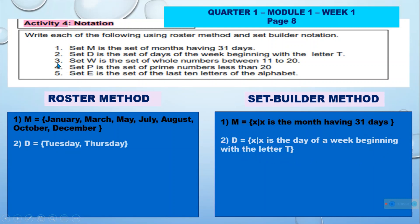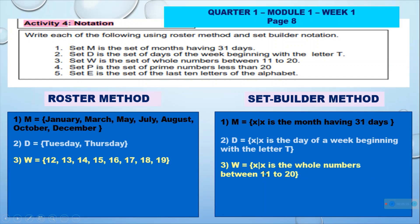Number 3: In verbal describing method, we have Set W is the set of whole numbers between 11 to 20. If we change it into roster method, we have: W = {12, 13, 14, 15, 16, 17, 18, 19}. And in set builder method, we have: W = {X such that X is a whole number between 11 to 20}.